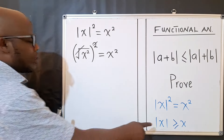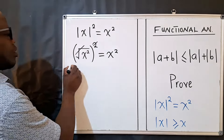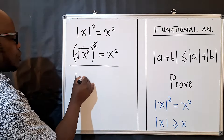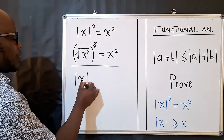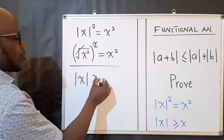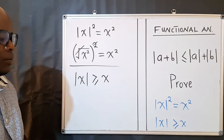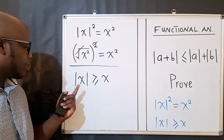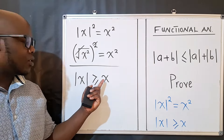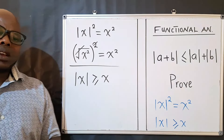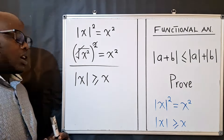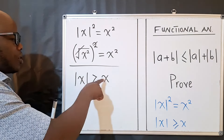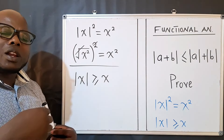The second property states that the absolute value of x is greater than or equal to x. The reason we use this inequality is that when you substitute any number here, the absolute value side is always greater than or equal to the plain value.